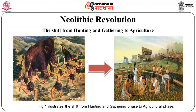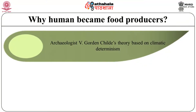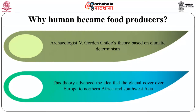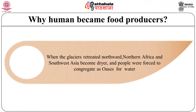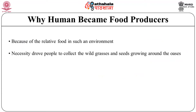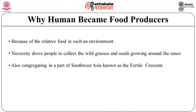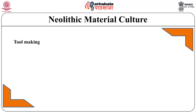Several theories have been proposed to account for the change in human subsistence practices. Archaeologist Gordon Childe's theory, based on climatic determinism, advanced the idea that when the glacial cover over Europe, northern Africa, and southwest Asia retreated northward, rain patterns shifted, making northern Africa and southwest Asia drier. People were forced to congregate at oases for water, and necessity drove them to collect wild grasses and seeds growing in a part of southwest Asia known as the Fertile Crescent.